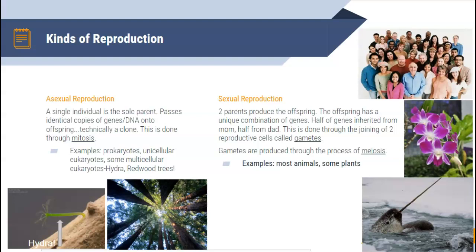Asexual reproduction is actually done through mitosis — a little bit plops off and that is your identical clone baby. Really simple things do this, like prokaryotes and unicellular eukaryotes. Actually, redwood trees do this too, which is kind of cool — they make a little clone baby that grows out of their root tips. But again, most plants and most animals reproduce through sexual reproduction, combining genetic info from mom and dad.